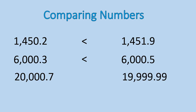20,000.7 and 19,999.99. This one here is twenty thousand is greater than nineteen thousand. The number we're looking at is in the ten thousand column. This one's a two, this one's a one. So this number is greater than.